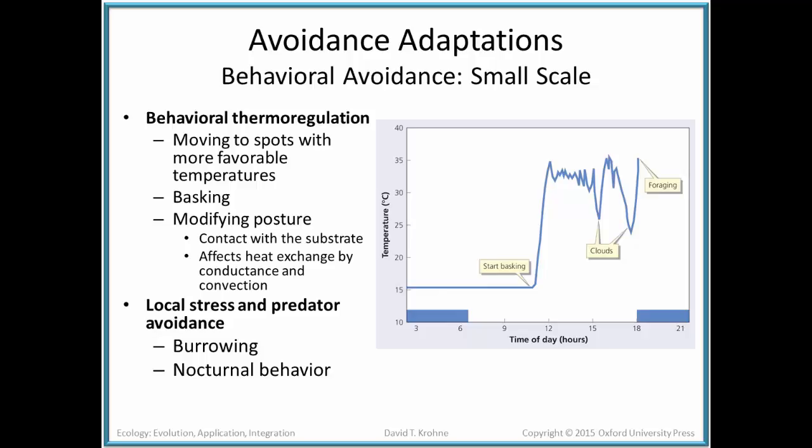Another possibility is avoidance adaptations on a small scale — micro-climate changes. For instance, basking behavior in lizards: you crawl out on top of a rock, warm yourself in the sun; when it gets too warm, you crawl under the rock to cool down. You can modify your posture by orienting towards or away from the sun, or by pressing your body against the substrate to either cool off or warm up. Other mechanisms include burrowing or shifting behaviors to nighttime. These are all small-scale but important behavioral avoidance mechanisms.